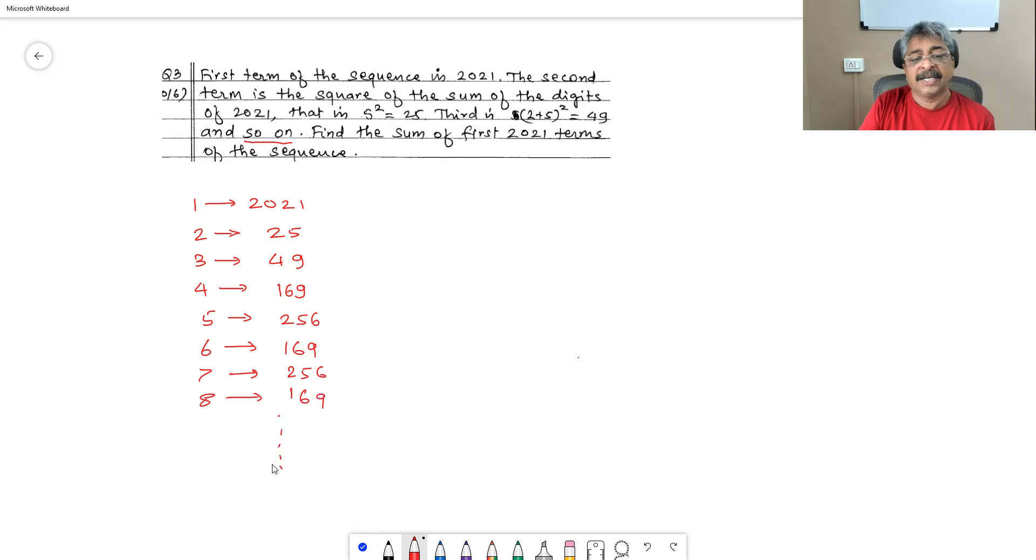Now, do you realize that 169 and 256, they are alternately coming in this particular sequence and therefore adding them is going to be easy. These are different numbers. So we will add the first three numbers little differently. And then starting from term 4, every even position is 169 and every odd position is 256. So now we should do the calculations correctly. So 2021st term will be 256. 2020th term will be 169.